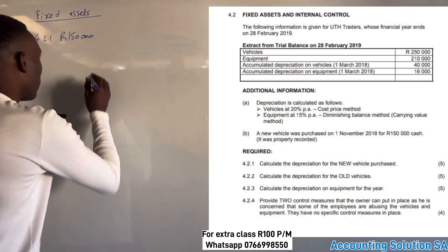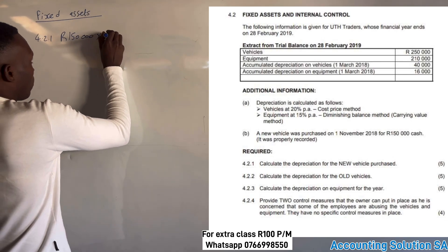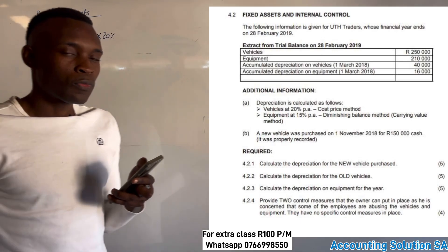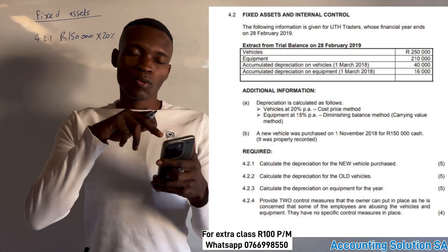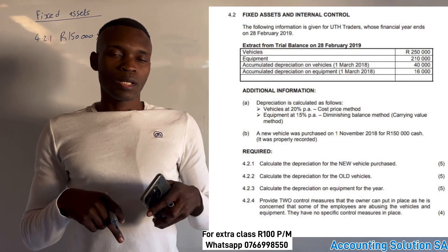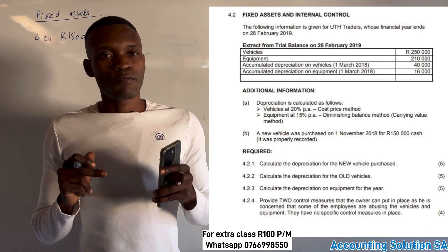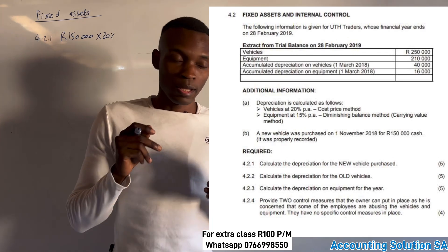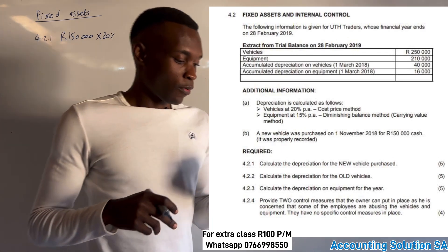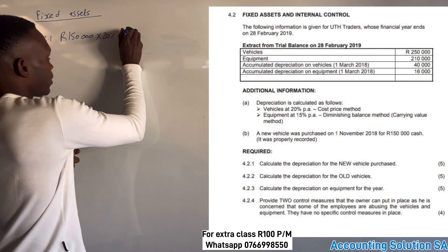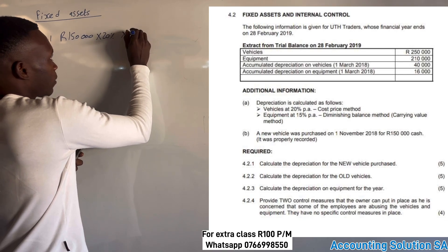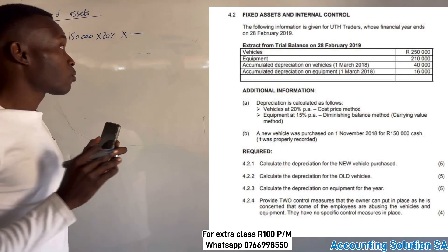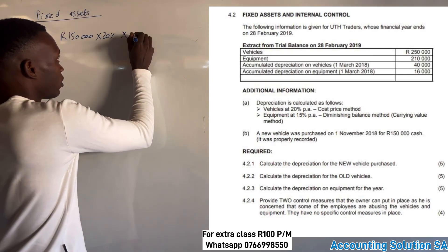However, this vehicle was purchased during the year and did not stay for 12 months, so we need to multiply by the number of months the vehicle has been in use, divided by 12. It's always multiplied by the number of months, divided by 12.